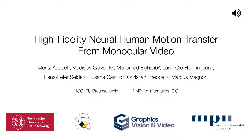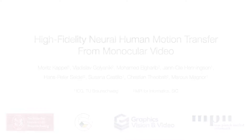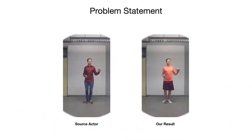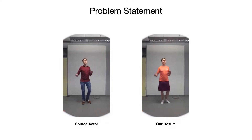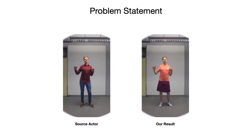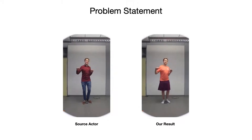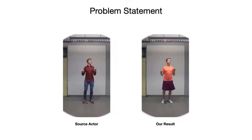We present a new framework for high fidelity neural human motion transfer for a monocular video that handles deformations of clothing in a temporally coherent way. Given a single monocular RGB video of a target person, our method is able to re-enact this person through the motion performed by another source video using an image-to-image translation approach.